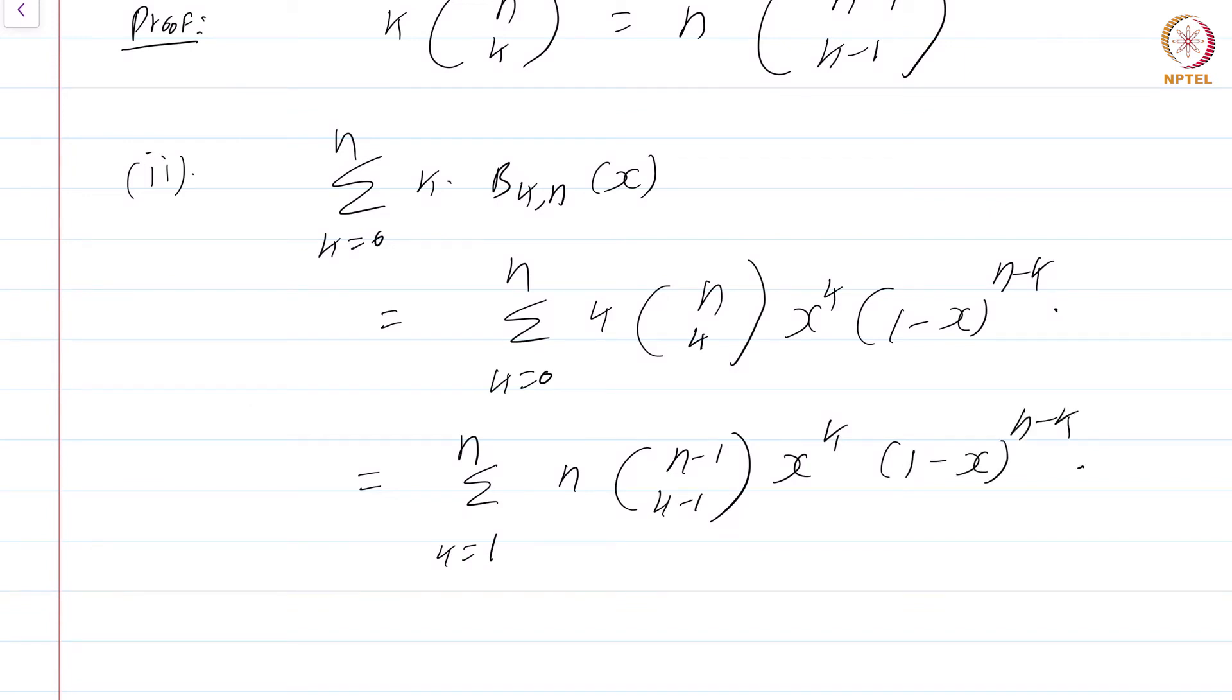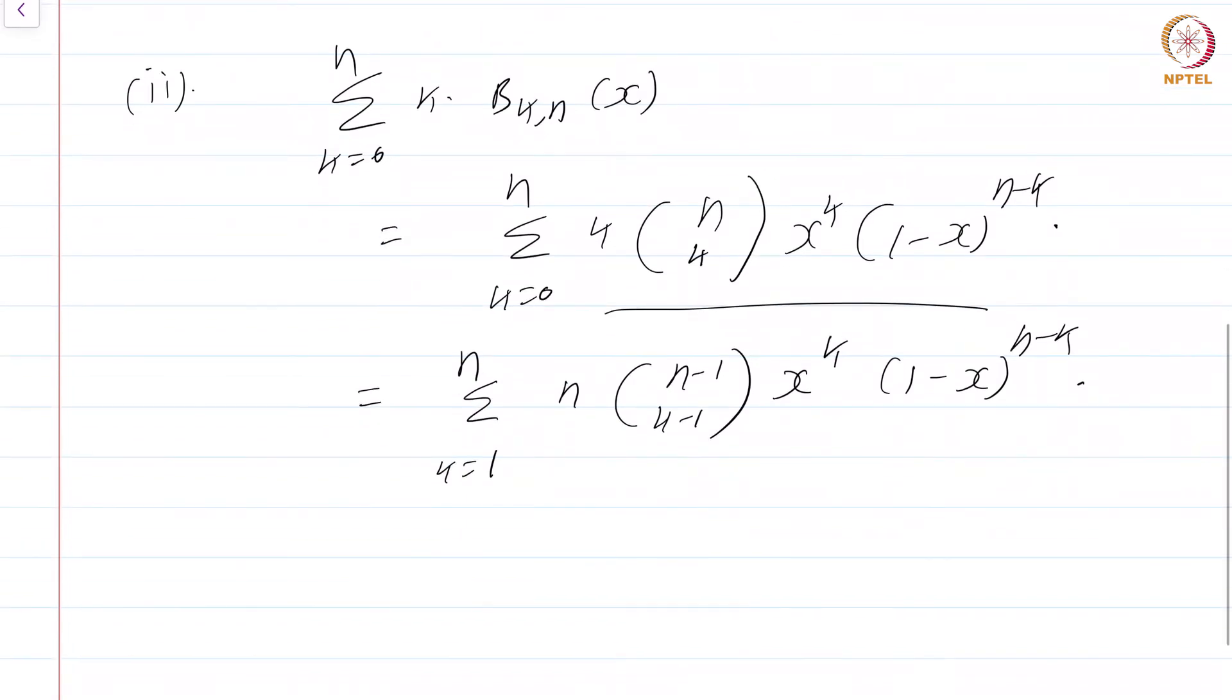Note the quantity corresponding to k equal to 0 vanished because obviously, when k equals 0 this term is 0. So, now that we have this, we can take this n outside simply because it is not dependent on the variable over which we are summing which happens to be k.